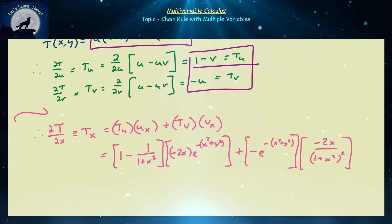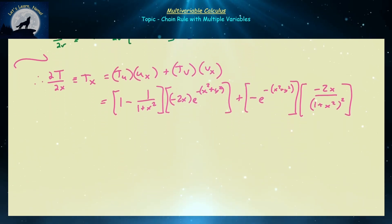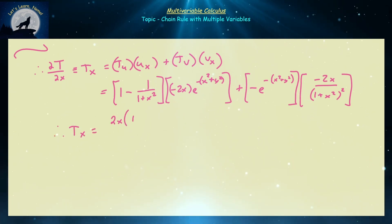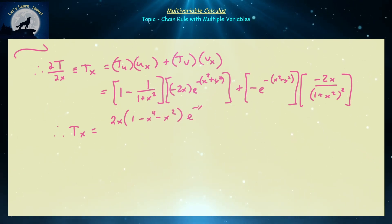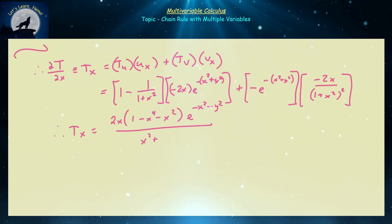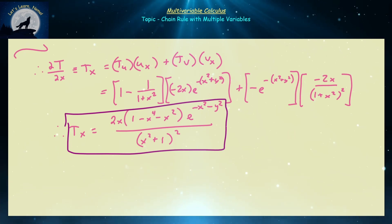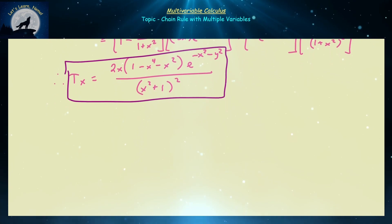When we simplify all of that out, T_x can be nicely represented as 2x·(1 − x⁴ − x²)·e^(−x²−y²) all over (x²+1)². If you're interested in how temperature is changing with respect to x only, that function models it perfectly.